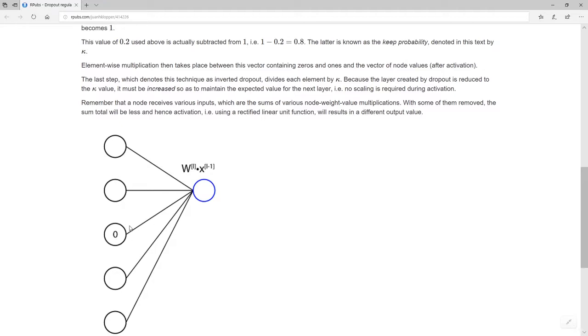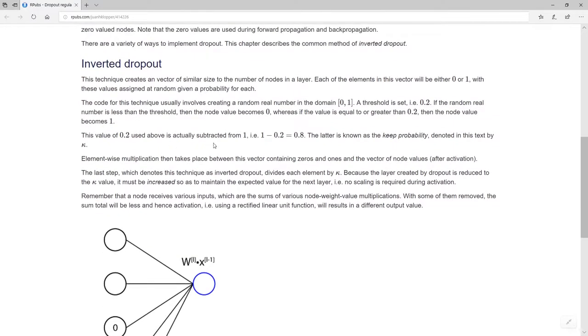So we have these zeros in there. Now when this all happens during randomizing those values, we actually subtract that value that we decide on, the 0.2 as our cutoff. We subtract that from one, and that gives us 0.8. And that is what we refer to as our keep probability value.